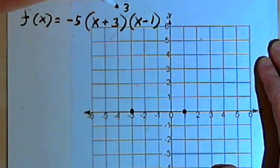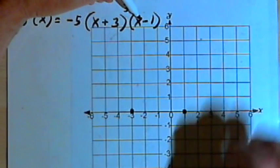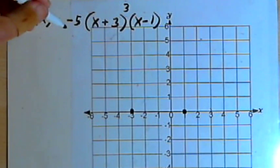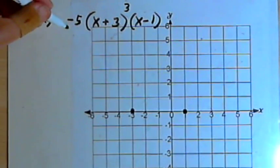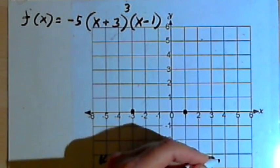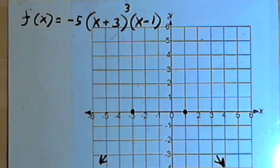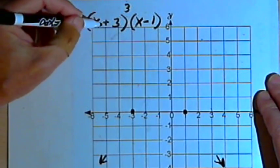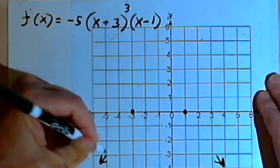The degree is going to be, let's see, I've got x plus 3 with a multiplicity of 3. So that's already the third degree, and then the x minus 1 makes it fourth degree. So it's an even degree with a negative lead coefficient. That means the end behavior is going to be down at both ends of the graph.